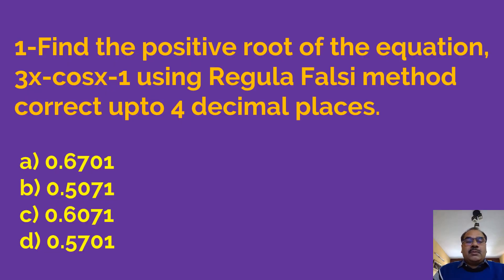Let us look at this problem. Find the positive root of the equation 3x minus cos x minus 1 using Regula Falsi method, correct up to 4 decimal places. The alternates are 0.6701, 0.5071, 0.6071 or 0.5701. We have to choose the correct answer.